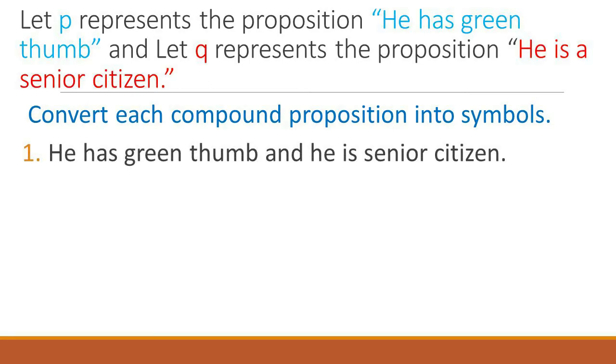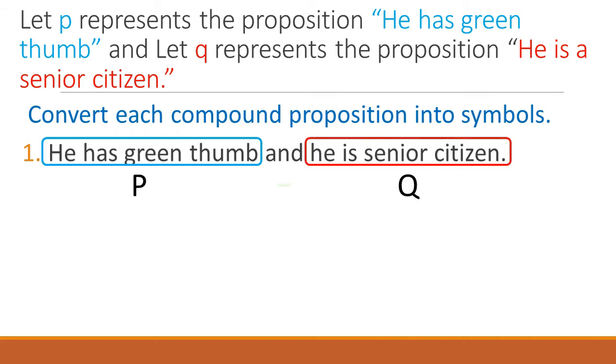He has green thumb and he is senior citizen. We convert he has green thumb with letter P, then we also convert he is senior citizen Q. Lastly, change the word 'and' with a caret symbol. Very good, so our converted form is P caret Q.